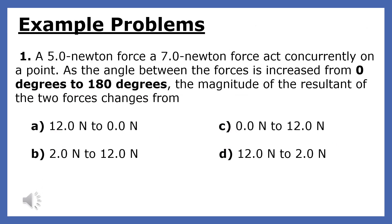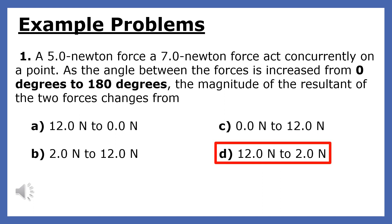A five-newton force and a seven-newton force act concurrently on a point. As the angle between the forces increases from zero degrees to 180 degrees, the magnitude of the resultant changes. Since the first angle is zero degrees, the resultant is found by adding the forces, giving us 12 newtons. The last angle is 180 degrees — when we subtract the forces, we get 2 newtons. The only choice that starts at 12 newtons and ends at 2 newtons is choice D.